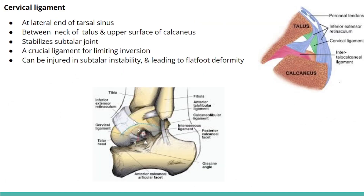The cervical ligament is also located at the lateral end of the tarsal sinus, between the neck of the talus and the upper surface of the calcaneus. It stabilizes the subtalar joint and is a crucial ligament that limits inversion. It can be injured in subtalar instability, which can lead to flat foot deformity.